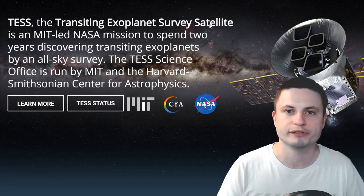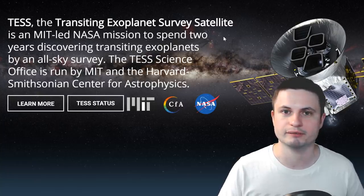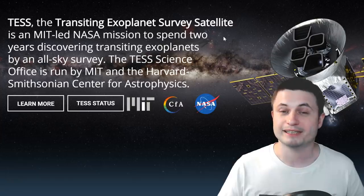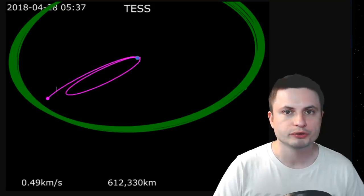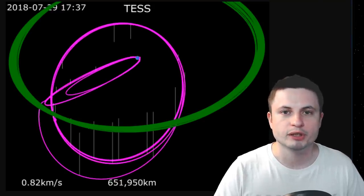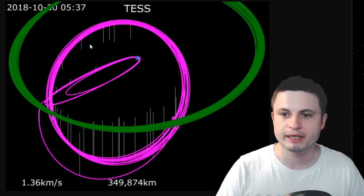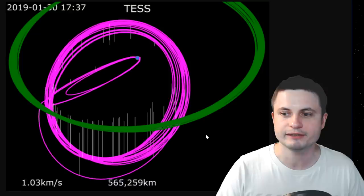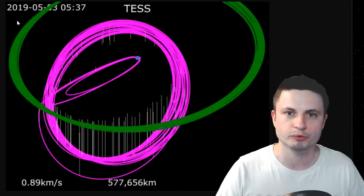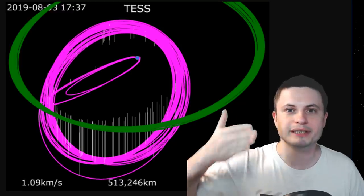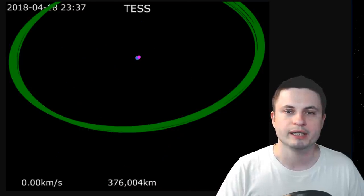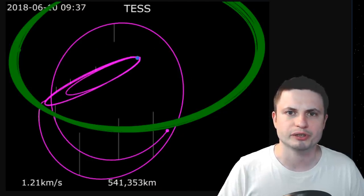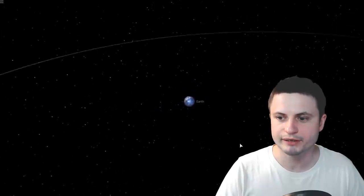The word TESS stands for Transiting Exoplanet Survey Satellite. It's essentially kind of like Kepler telescope that discovered thousands of planets, but slightly more advanced because it's going to be able to cover much larger area. In order to do so it needs a very special orbit, which is what you can see right here on the screen. The purple orbit is the orbit of TESS telescope, the green orbit is the orbit of the moon. So its orbit is actually perpendicular to the moon's orbit and has a very stable resonance with it. I think it's better if I actually demonstrate this to you using Universe Sandbox so you can see the orbit by yourself.